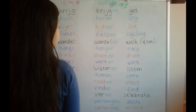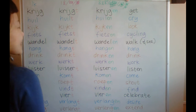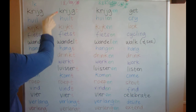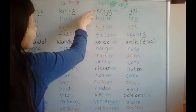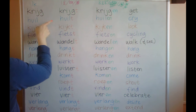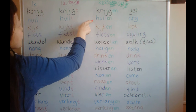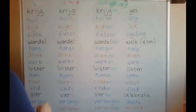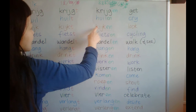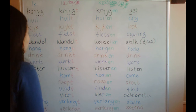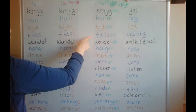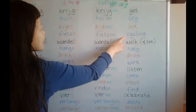This is the English translation. Let's start: 'krijg / krijgt / krijgen' — get. 'Help / helpt / helpen' — help. 'Kijk / kijkt / kijken' — look. 'Fiets / fietst / fietsen' — cycling.